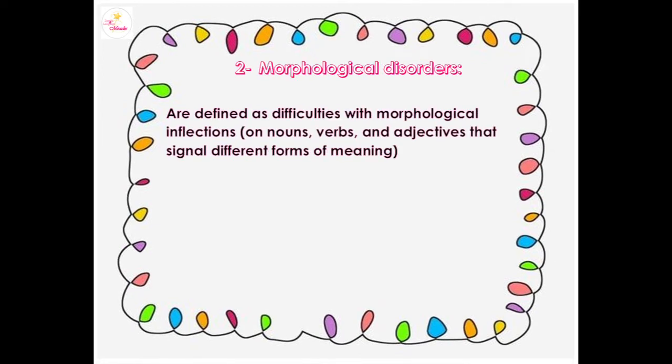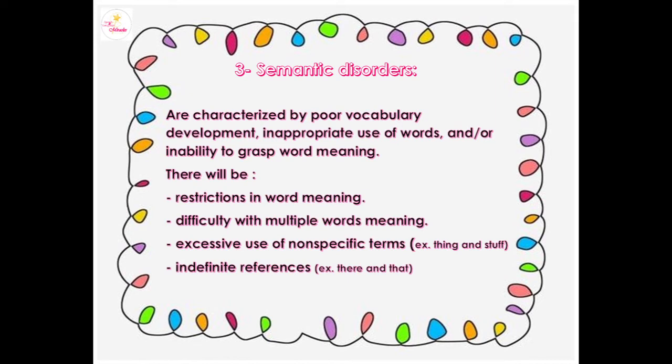Morphological disorders are defined as difficulties with morphological inflections on nouns, verbs, and adjectives that signal different forms of meaning. Semantic disorders are characterized by poor vocabulary development, inappropriate use of words, and/or inability to grasp word meaning, with restrictions in word meaning, difficulty with multiple word meanings, and excessive use of non-specific terms and indefinite references.